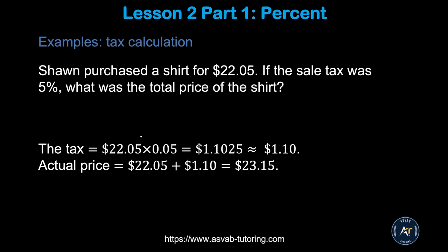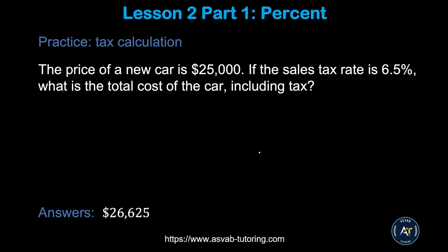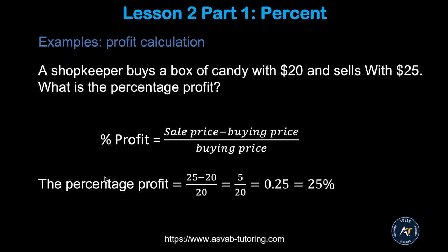Next: tax calculation. Sean purchased a shirt for $22.05. If the sales tax is 5 percent, what is the total price? Find the tax: 5% of $22.05 — convert to decimal and multiply to get the tax amount. Round to two decimal places since we're dealing with money. Add the tax to $22.05 to get the final price of $23.15. Here's a practice problem — try it and check your answer.